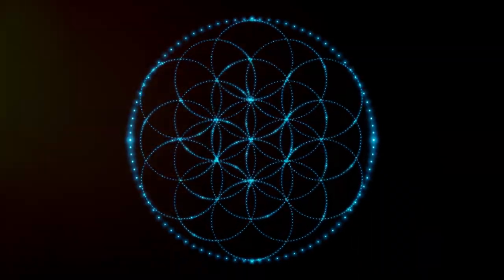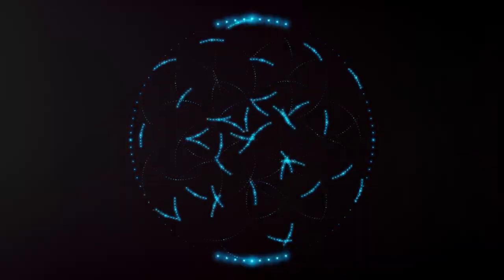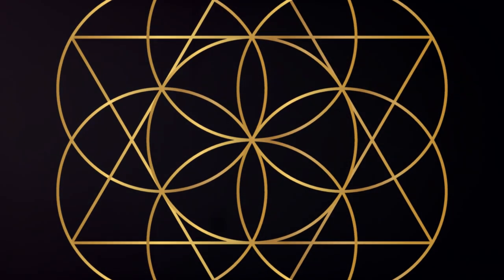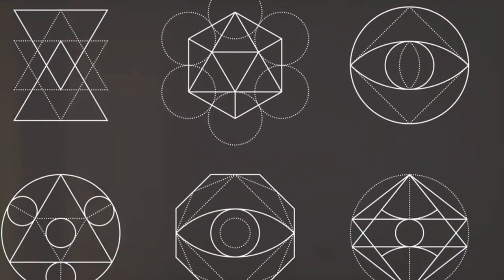It's considered a visual representation of the interconnectedness of all living things. Another key symbol is the vesica piscis, which consists of two overlapping circles that create a lens shape in the center.